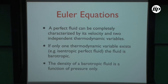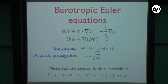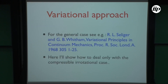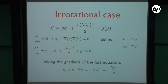The Euler equation has two useful limits: the incompressible limit and the rotational limit where you have only compressible modes. When the thermodynamics degenerates from two variables to one, the flow is called barotropic. Barotropic just means there is a relation between density and pressure, and this system is obviously time-reversible because there is no diffusion. There is a variational principle for the Euler equation. You introduce a Lagrangian where rho is the density and phi is the velocity potential, and the Euler-Lagrange equations give back the Euler equation.